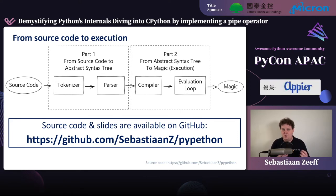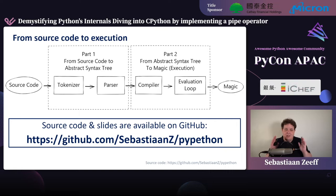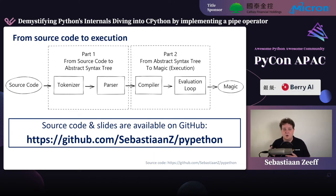Then in part two, we're going to take that abstract syntax tree, compile it into bytecode, feed it to the evaluation loop, and then hopefully something magic happens — the computer will do something, and with a bit of luck it's actually the thing you intended. There's a lot of information today, so if you want to check out the slides afterwards, they're on my GitHub page, along with the source code including the new operator.